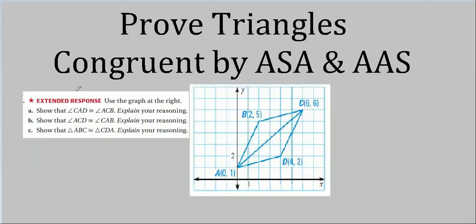Now here's when we're going to use the graph and apply some of the theorems we've used. What we have to do is show that these angles are congruent and then show that triangle ABC is congruent to triangle CDA. I think it would be very easy to show this, and once you show this the rest just falls out, because the angles in congruent triangles are all congruent.